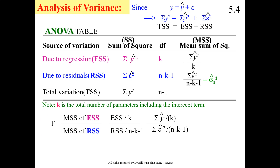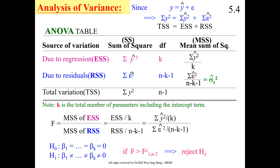F can be calculated as the mean sum of squares of ESS — that is, the summation of y-hat squared divided by k — divided by the mean sum of squares of RSS, which is RSS divided by n minus k minus 1. The null hypothesis is that beta 1 through beta k are all equal to zero, and the alternative is that at least one beta is not equal to zero. If F computed is greater than F critical, we reject the null hypothesis and conclude that at least one partial regression coefficient is not equal to zero.